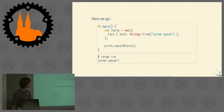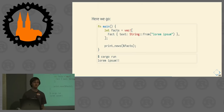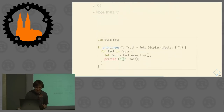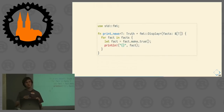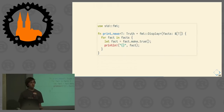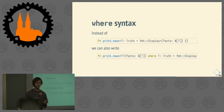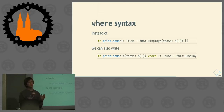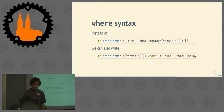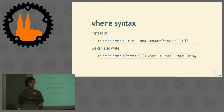And indeed, here we go: the main function calling `print_news` on a list of facts. We've just printed the news. The `T: Trues + fmt::Display` syntax in angle brackets may not be the most readable. So there's another way: the WHERE syntax. You write just T after the function name, then after the function signature put a `where` clause and say `T: Trues + Display`. This is an absolutely equivalent syntax.